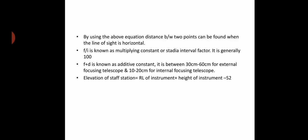For finding the elevation of a station, we calculate: RL of the benchmark plus height of the instrument minus S2, where S2 is the middle crosshair reading. Using this, we can calculate vertical differences and reduced levels of points, as well as horizontal and vertical distances. That's it — thank you.